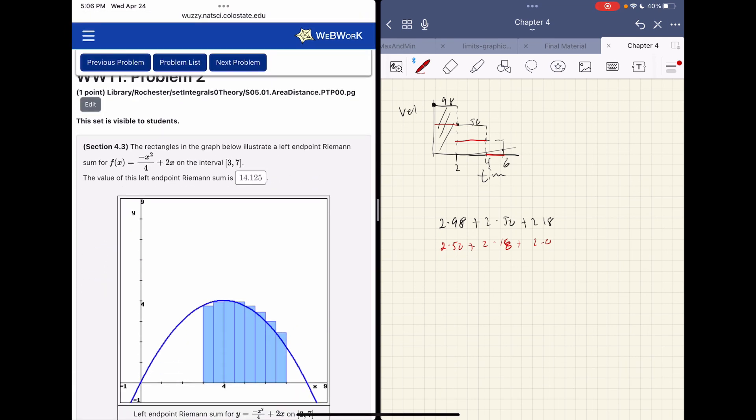And what I want us to notice is when I plotted the data, the units of area is the units of the y value times the units of the x value. So my y value is measured in feet per second, and my x value is measured in seconds, and I multiply them together, I get feet. So that was problem one.